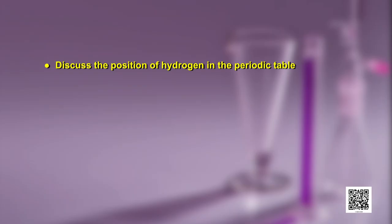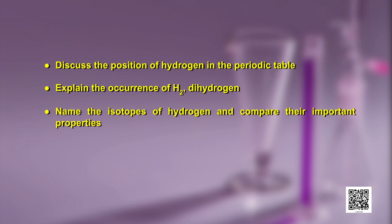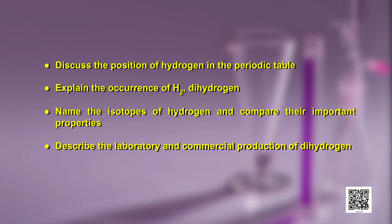Let us know the objectives of this program before we view it. After viewing, you will be able to discuss the position of hydrogen in the periodic table, explain the occurrence of H2 dihydrogen, describe the isotopes of hydrogen and their important properties, and describe the laboratory and commercial production of dihydrogen.